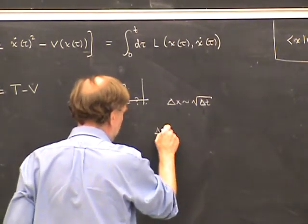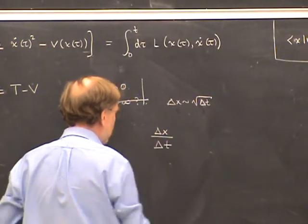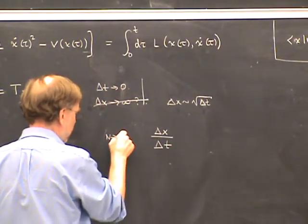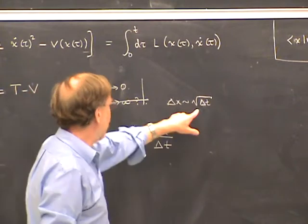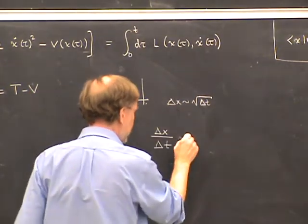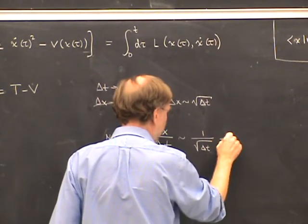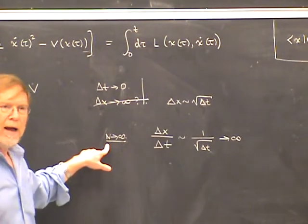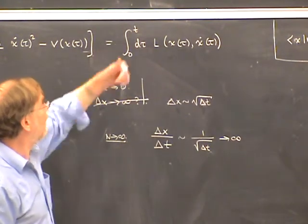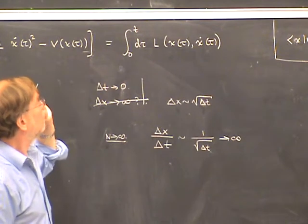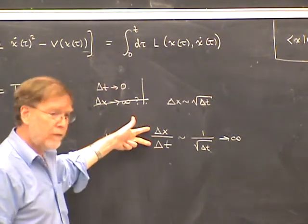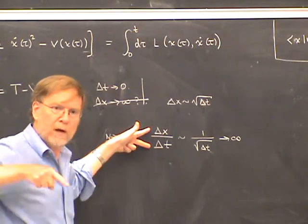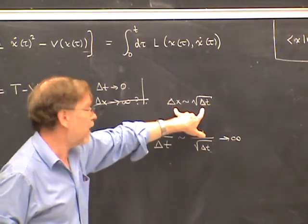I'll show you this in the next lecture. As a result, for the paths that really make a contribution to the path integral, as δt goes to zero δx also goes to zero. So the typical paths that contribute to the path integral are actually continuous.